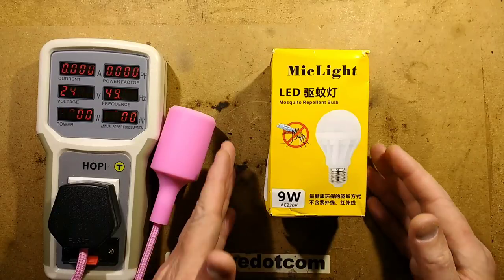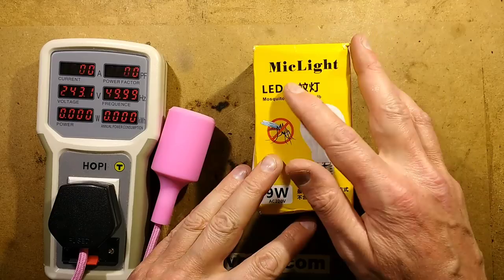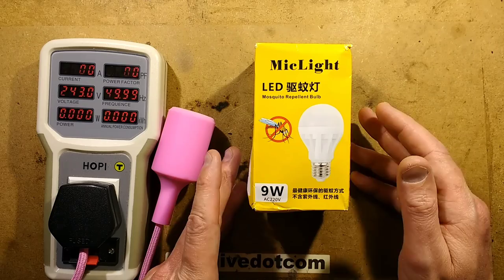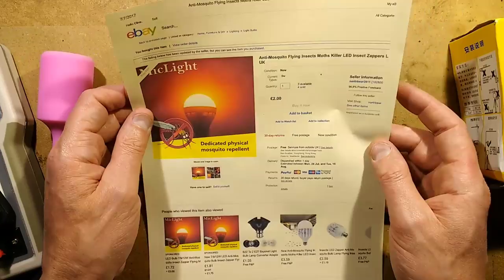I was looking at some of the insect zapping lamps on eBay and I came across this Mic Light, or is it Mic Light or Mic Light. It says LED mosquito repellent bulb and if you look at the listing it's a bit deceiving. It says anti-mosquito flying insects moth killer LED insect zappers. It doesn't kill them.